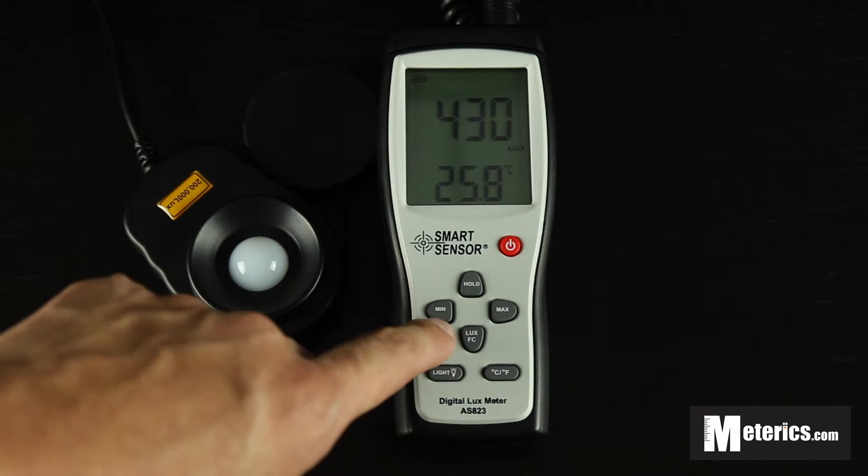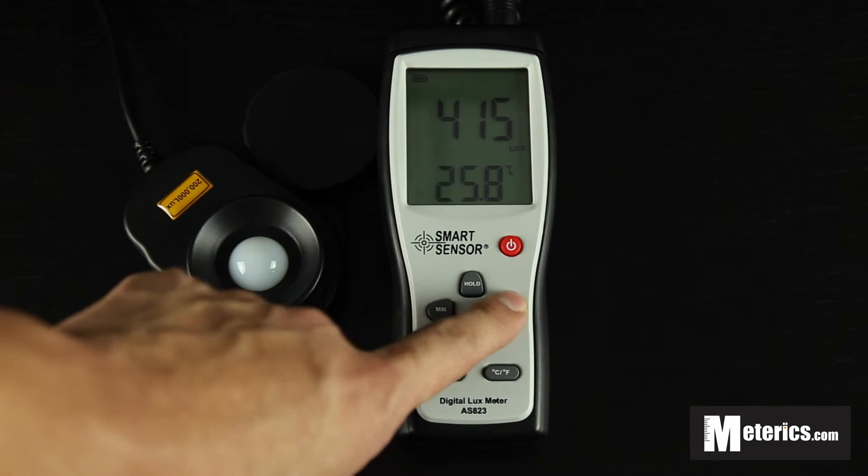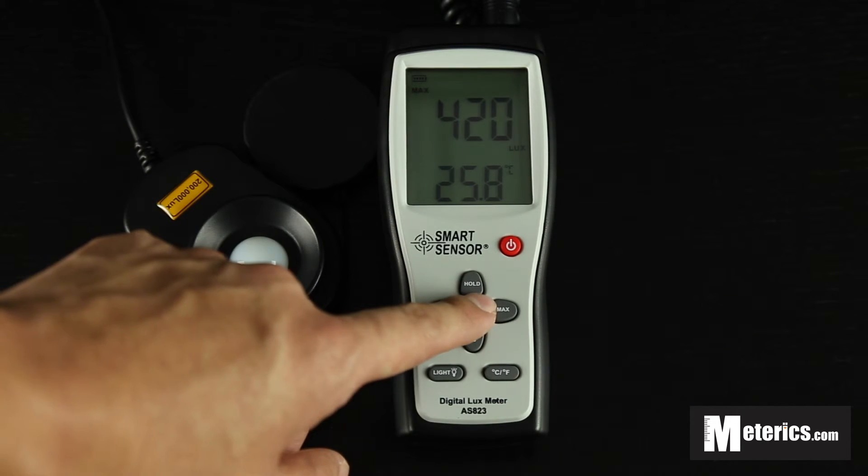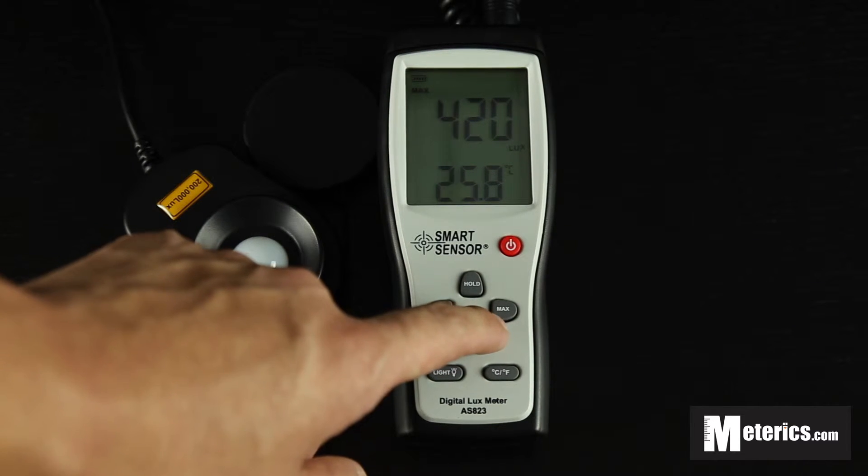As you can see on the left and right you have the minimum and maximum. If you press that you'll see max on top there and that means it's only going to show anything above this. So basically the maximum reading for each session.